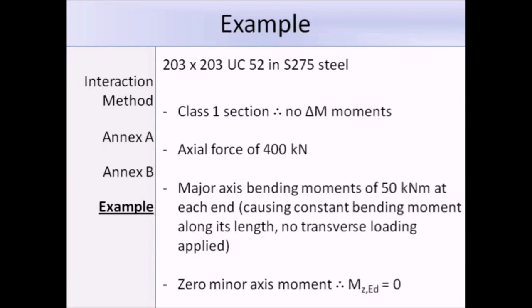This is the example. We're dealing with a class 1, 203 times 203 UC 52, in grade S275 steel, undergoing an axial force of 400 kN, and a major axis bending moment of 50 kNm at each end. There's no minor axis moment, meaning MZED is equal to zero.